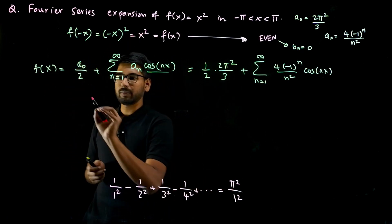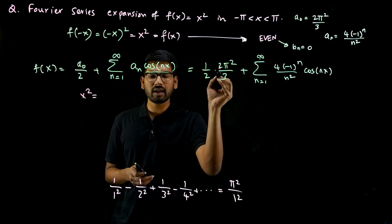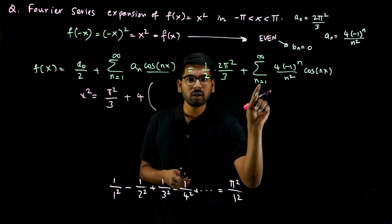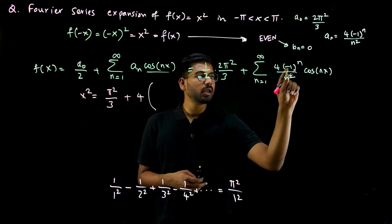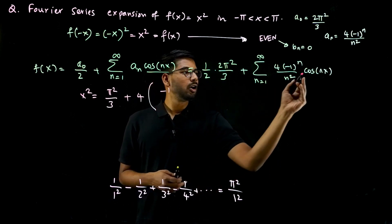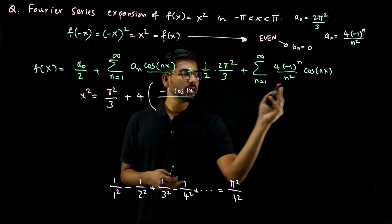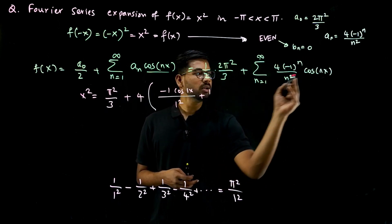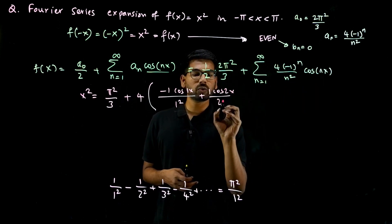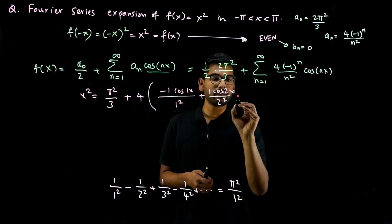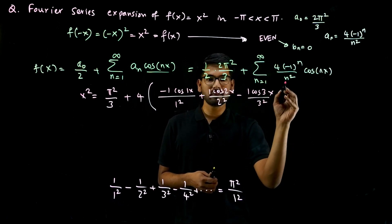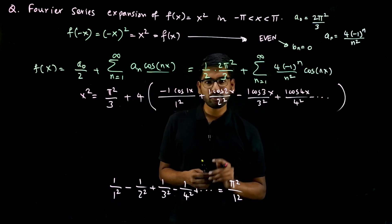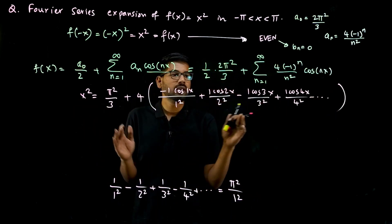We know f of x is x squared, so we can write: x squared equals pi squared by 3, plus 4 times the summation. Taking the 4 outside and expanding term by term: for n equal to 1, minus 1 power 1 is minus 1, giving minus cos x over 1 squared; for n equal to 2, minus 1 squared is plus 1, giving plus cos 2x over 2 squared; for n equal to 3, giving minus cos 3x over 3 squared; for n equal to 4, giving plus cos 4x over 4 squared; and so on to infinity.